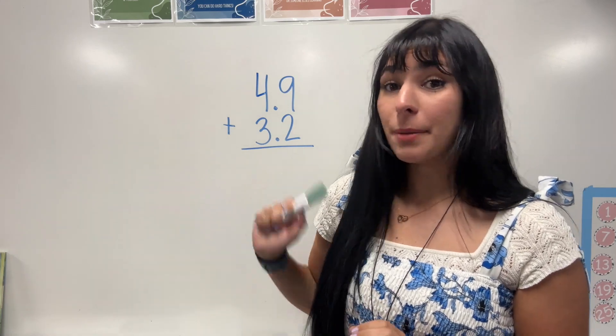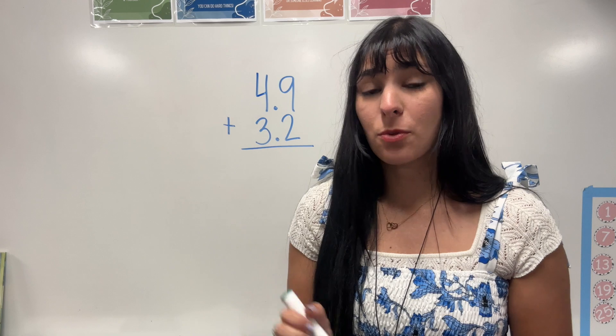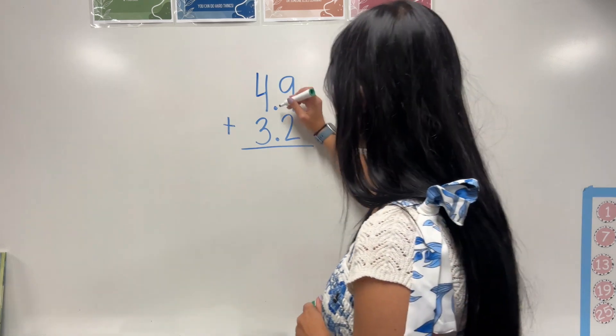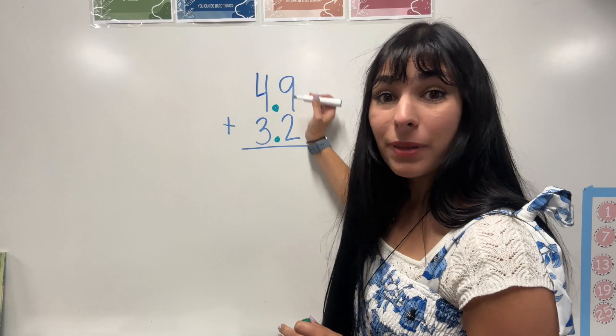For our first problem, we have 4.9 plus 3.2. The most important part when we're adding and subtracting decimals is that the decimals line up. So when our decimals line up like this, that also means that our place values will line up.